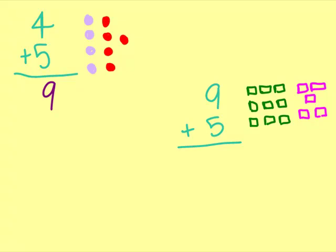Now, let's count the total number of squares. 1, 2, 3, 4, 5, 6, 7, 8, 9, 10, 11, 12, 13, 14. 9 plus 5 is 14.